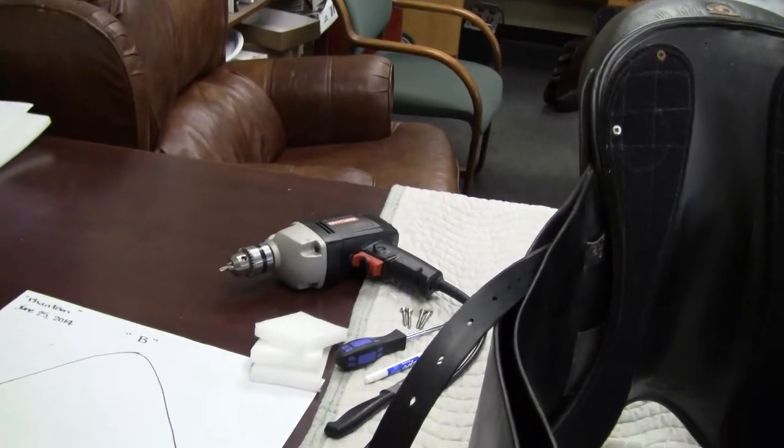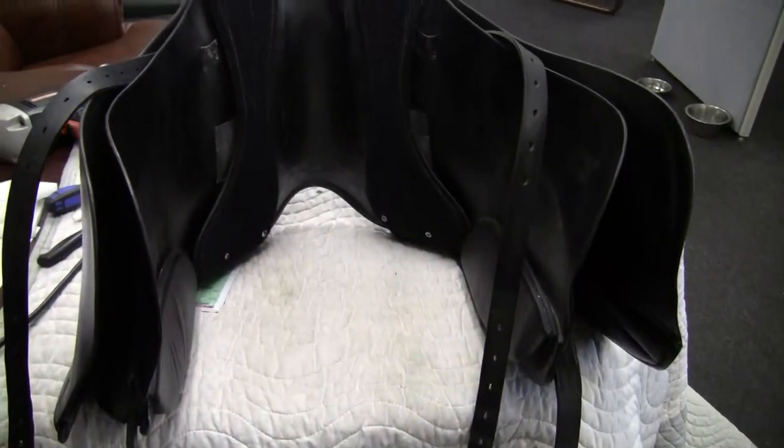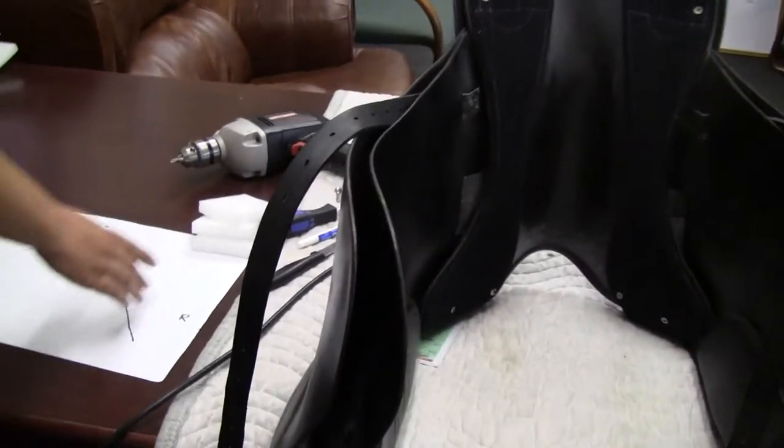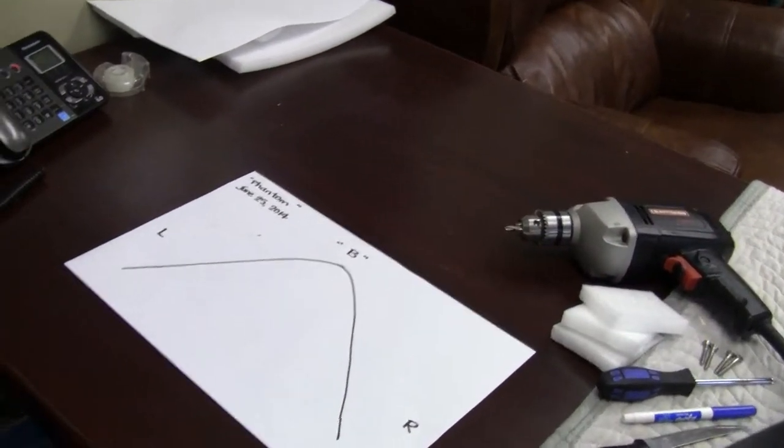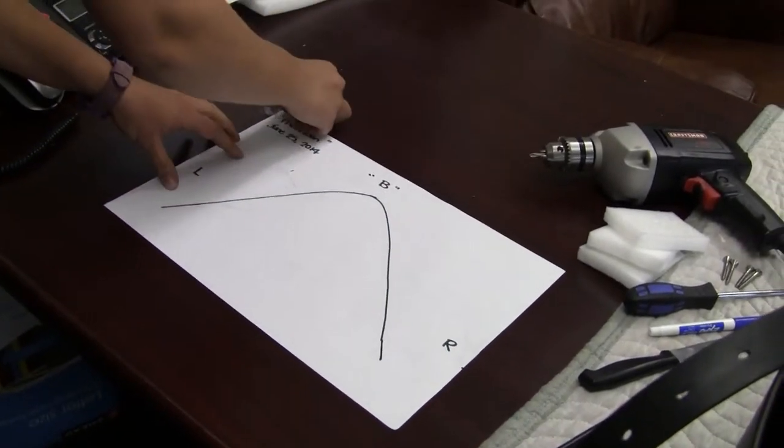You'll need a table for viewing your templates and a padded surface for working on the saddle. So start by putting your templates on the table. We recommend that you tape them down which will make them much easier to work with when you're looking at your saddle.